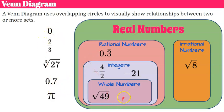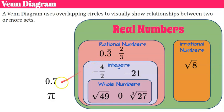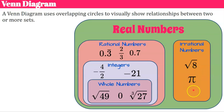Zero is a whole number, also an integer, rational, and real. Two-thirds is rational because it can be written as a fraction. Seven-tenths is also a terminating decimal, making it rational. Pi is irrational because it is a non-terminating, non-repeating decimal.